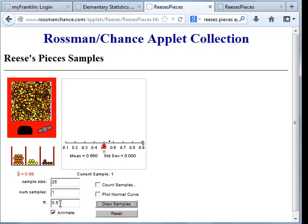Now, what we believe about the population proportion is that it's 50%. We believe that half of all Reese's Pieces candies are orange. The other half are either yellow or brown.